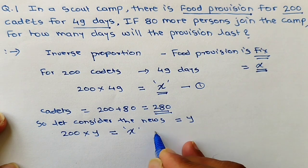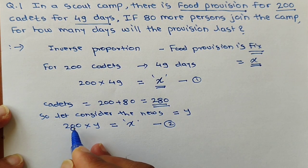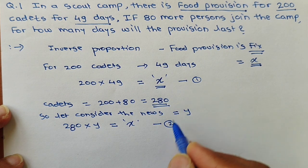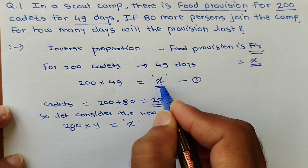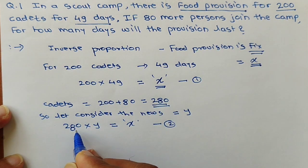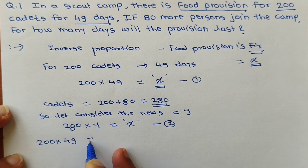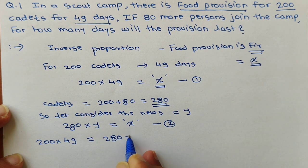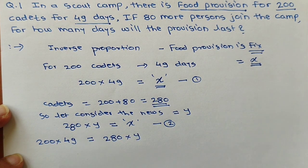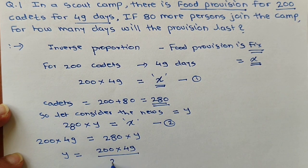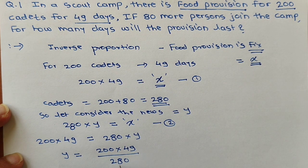From the two equations — 200 × 49 = x and 280 × y = x — since the right-hand sides are equal, the left-hand sides must also be equal. So we get the equation 200 into 49 equals 280 into y. Solving this, y equals 200 into 49 divided by 280.